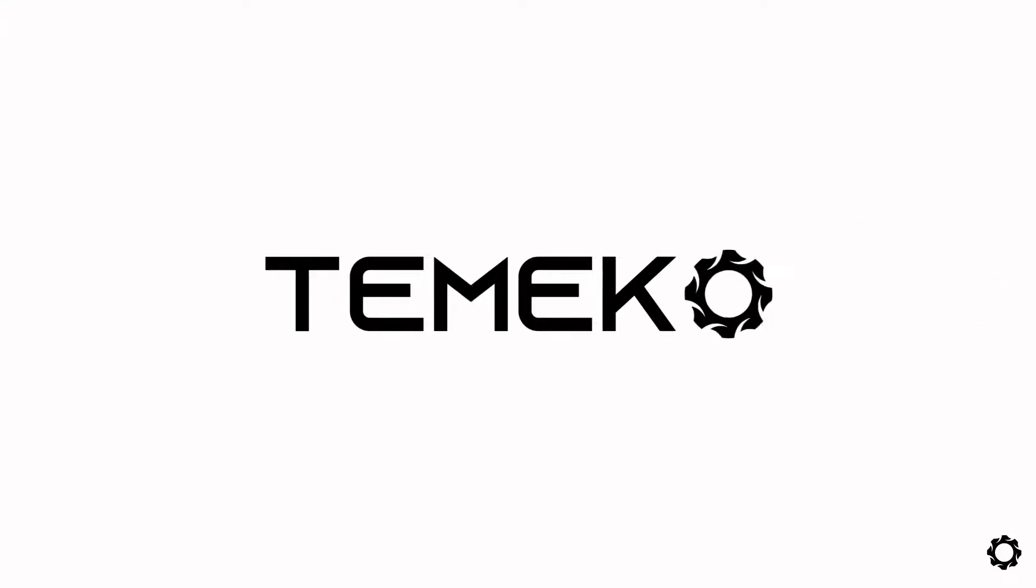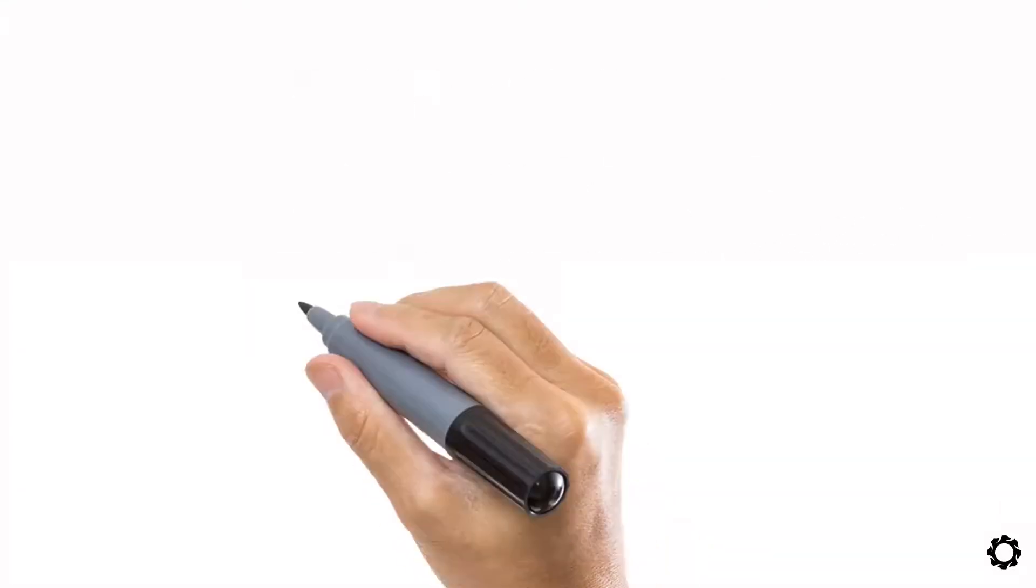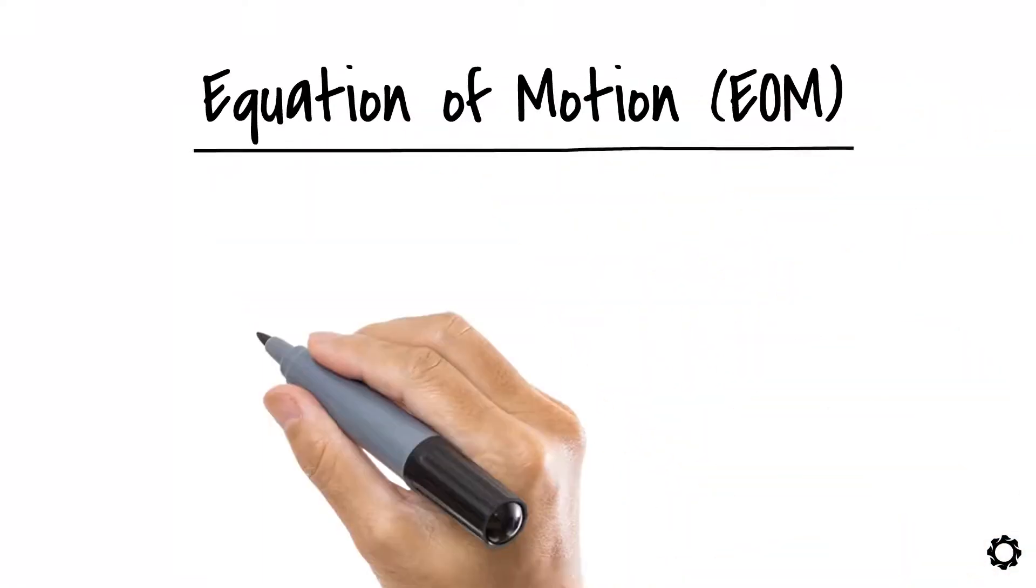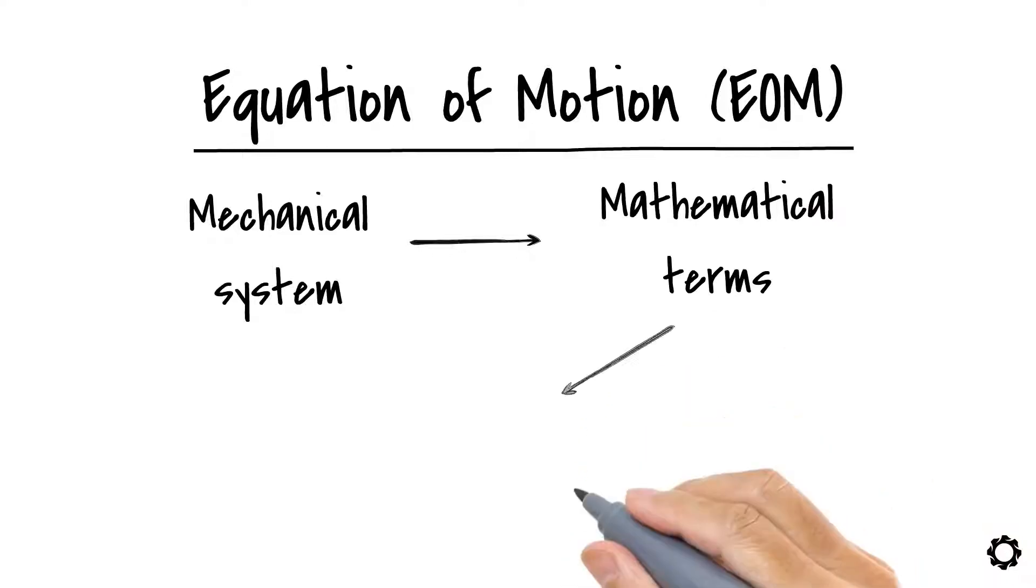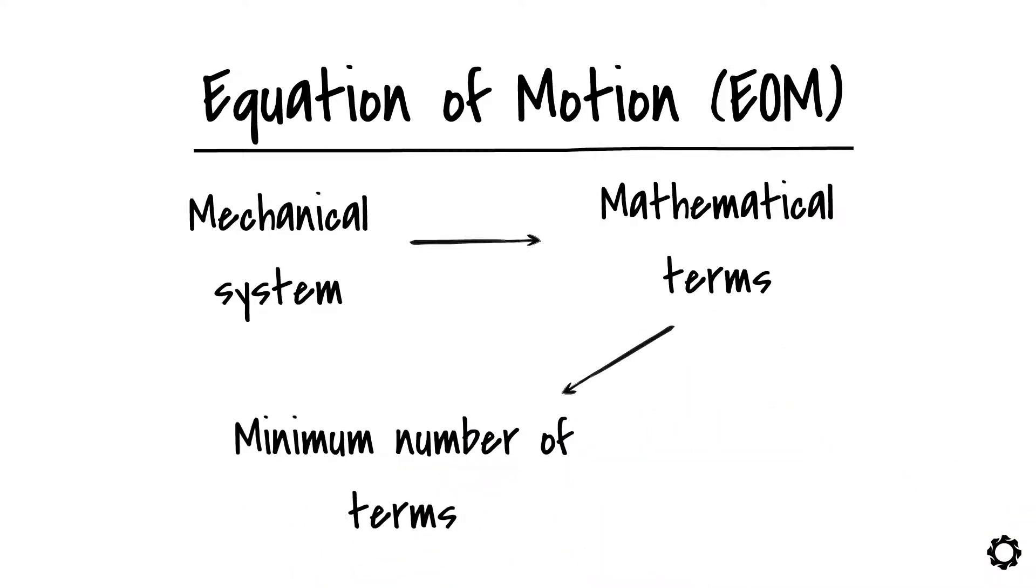Hi and welcome to Temeco. In this video we will talk about how a mechanical system can be described in mathematical terms. What are the minimum number of terms needed in this description and hopefully set the ground for the more detailed explanations that we have for you in this topic.